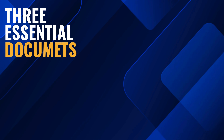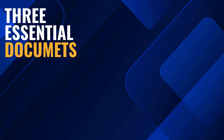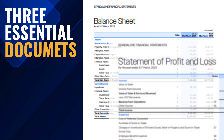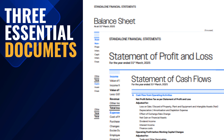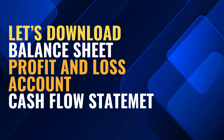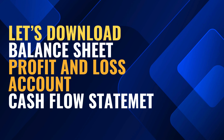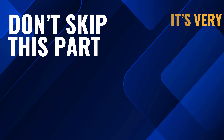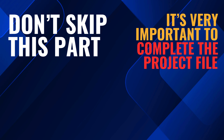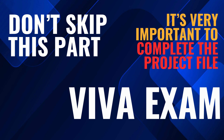Before we begin, we'll need three essential documents: the balance sheet, profit and loss account, and cash flow statement for the last two years. So first let me show you how to download them. Please don't skip this part — it's not only important for completing your project file but will also help you during your Viva examination.